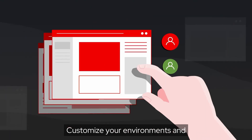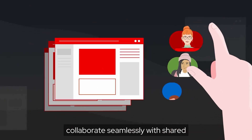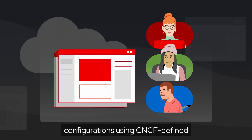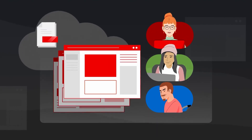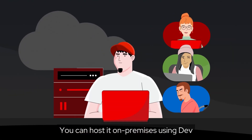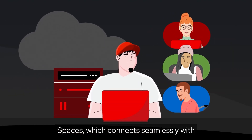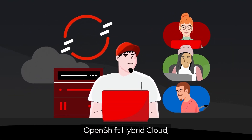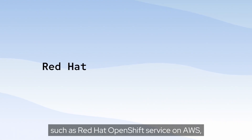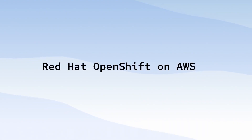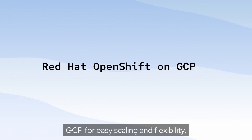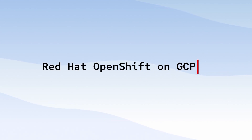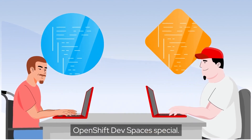Customize your environments and collaborate seamlessly with shared configurations using CNCF-defined standards like DevFiles. You can host it on-premises using DevSpaces, which connects seamlessly with OpenShift Hybrid Cloud, such as Red Hat OpenShift Service on AWS, Azure Red Hat OpenShift and OpenShift on GCP for easy scaling and flexibility.